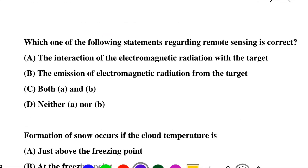Next question: which of the following statements regarding remote sensing is correct? Option A: the interaction of the electromagnetic radiation with the target, option B: the emission of electromagnetic radiation from the target, option C: both A and B, option D: neither A nor B. So the correct answer is option C: both A and B.